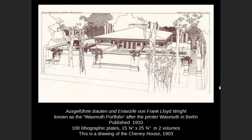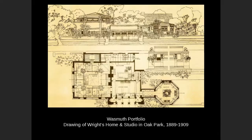The portfolio had a hundred plates of beautiful artistic renderings. Marion Mahoney did a lot of these renderings, and Wright took many of them and reused them in the Wasmuth Portfolio. Here's a plate from the portfolio of his home and studio, showing the floor plan and elevation rendering. Architects spread it around their offices — Mies van der Rohe talked about how he remembered seeing it in the office of Peter Behrens where he was working at the time.